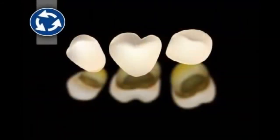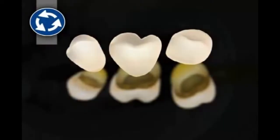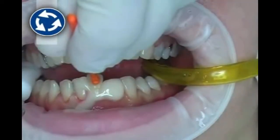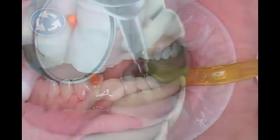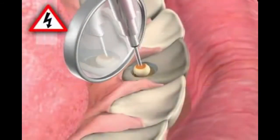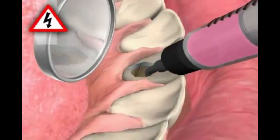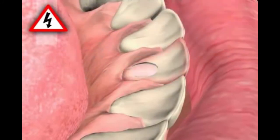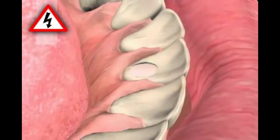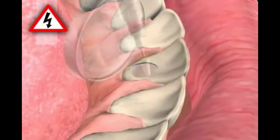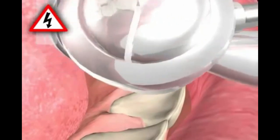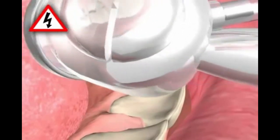Alternatives to internal bleaching would include manufacturing a crown, or possibly a veneer. However, these procedures would be far more costly. The particular risks of internal bleaching are, for example, pain after treatment due to a leaky root filling and the discharge of the bleaching gel, or a perforation of the crown or root of the tooth when the tooth is drilled open. Both complications can ultimately lead to the loss of the tooth.